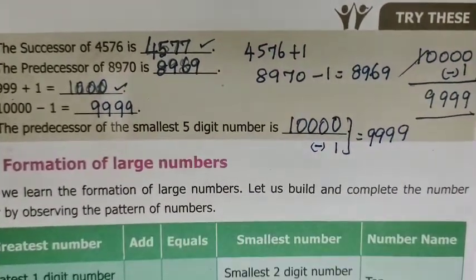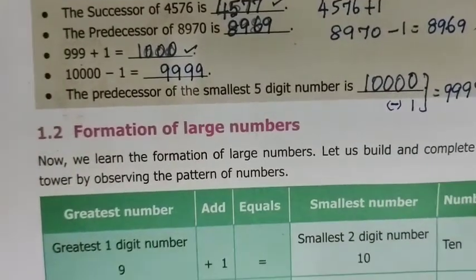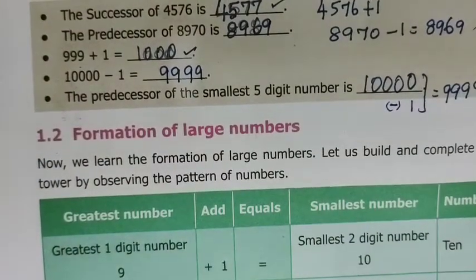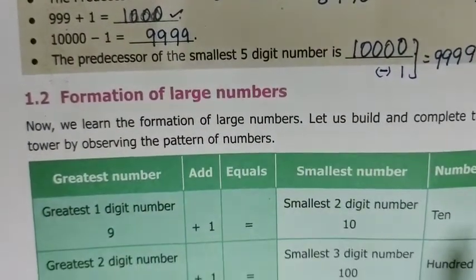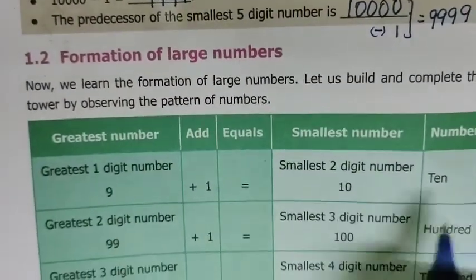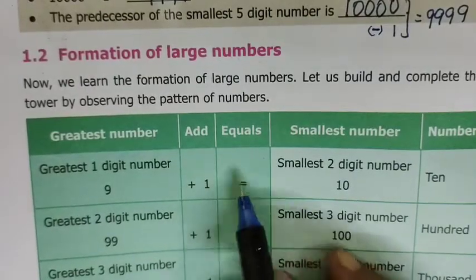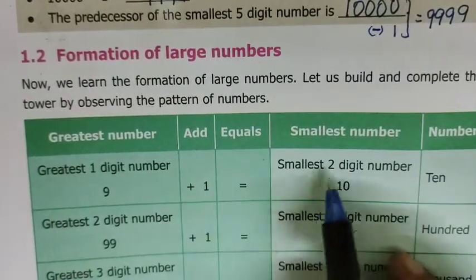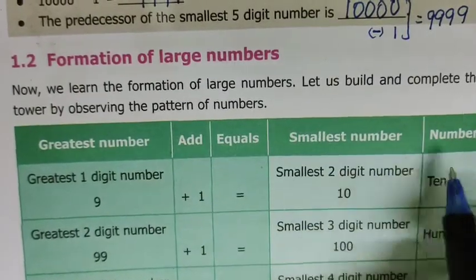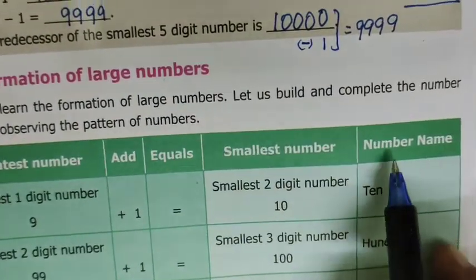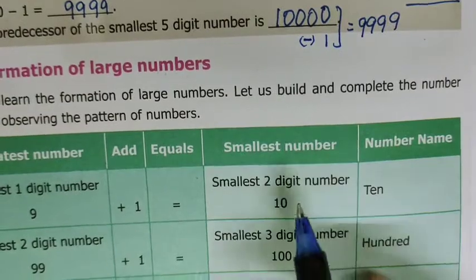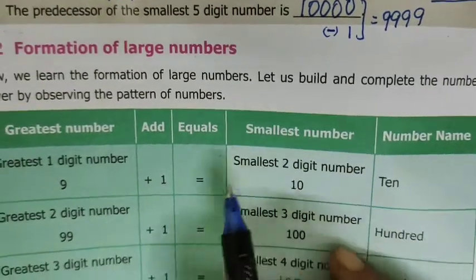Formation of large numbers: how to form a large number. The greatest number plus 1 equals the smallest number of the next digit group. Let's see what the answers are.